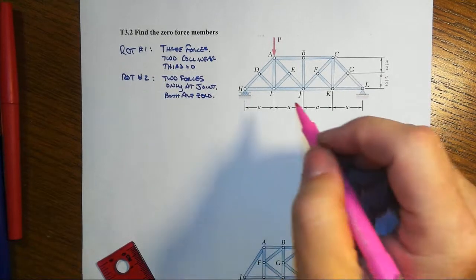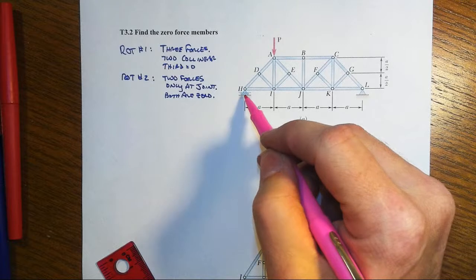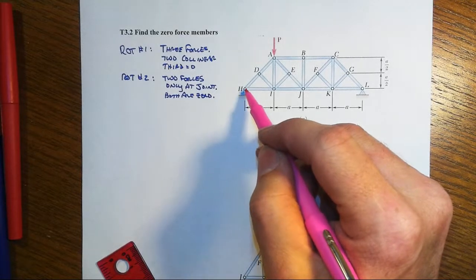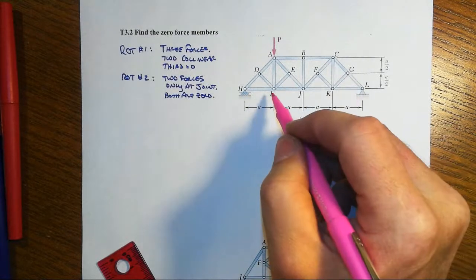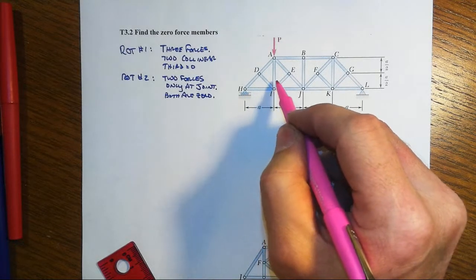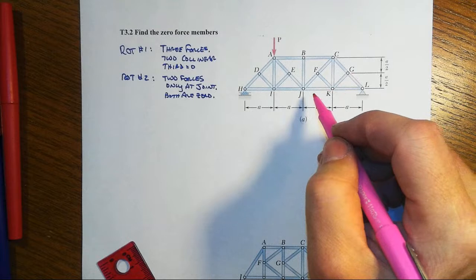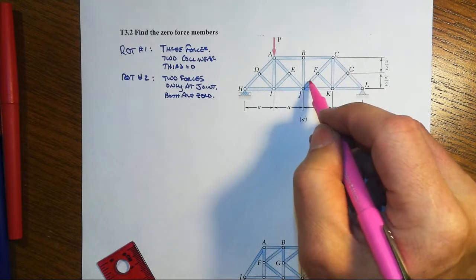We've got a joint H here that has a reaction and then three forces, so a total of three but none of them are collinear, so the rule doesn't apply there. We come over to I, got one, two, three, four, five forces, so no go there. J, one, two, three, four, five, nothing there.